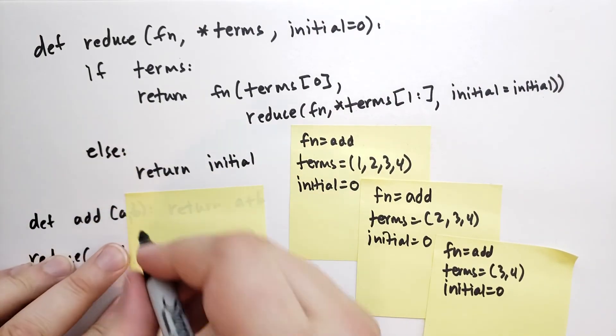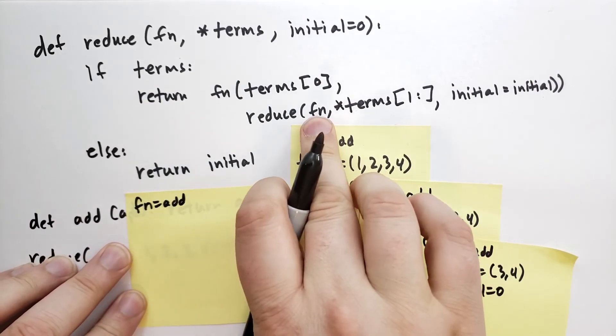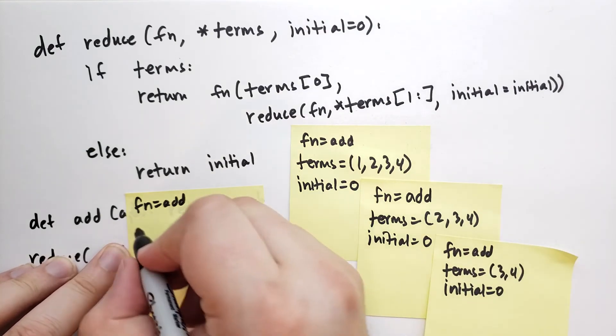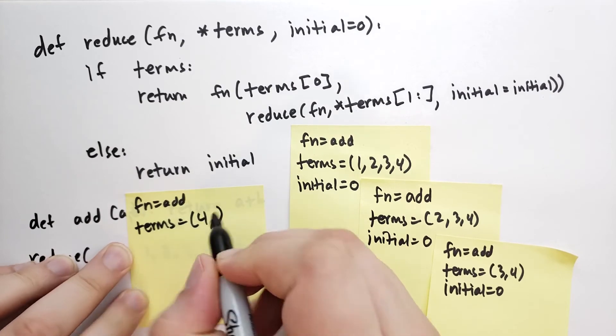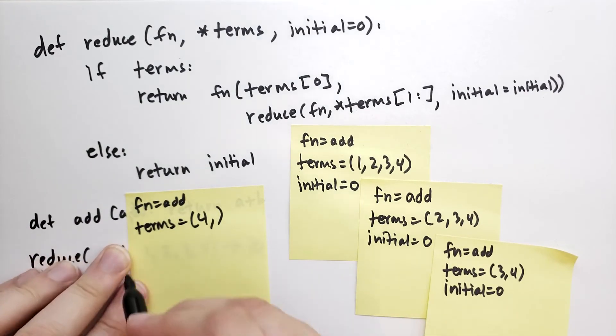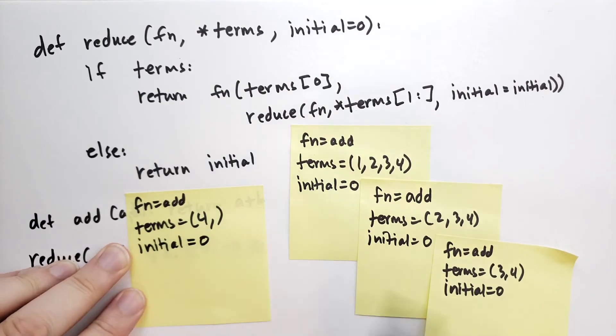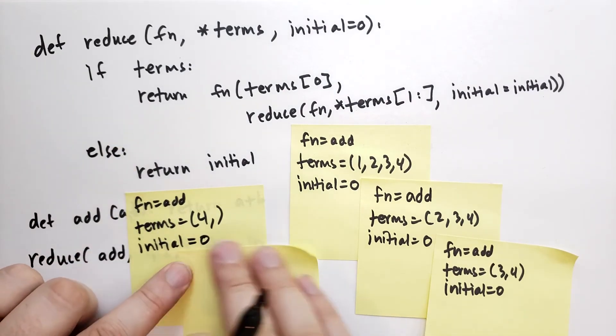So the function is still add. And then the term starting at the second element and continuing, so now terms is equal to 4,. I put a comma here because this is a tuple. And then initial is still 0. And if terms, and there are terms, we're going to call one more time to reduce.